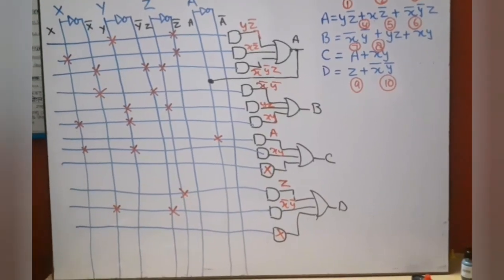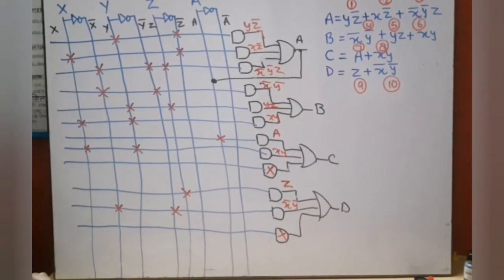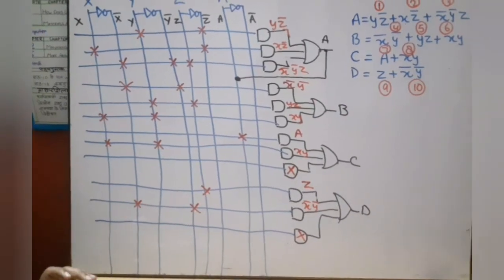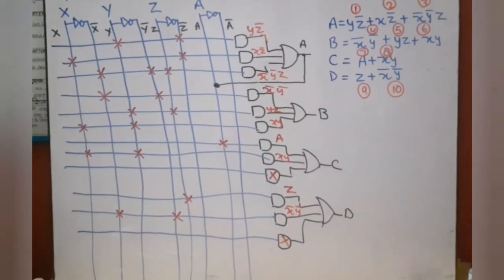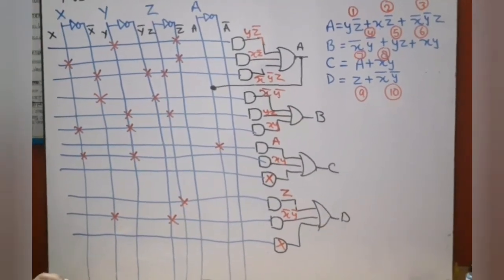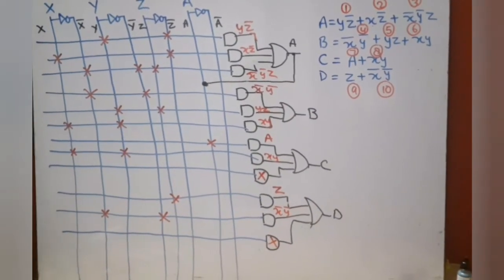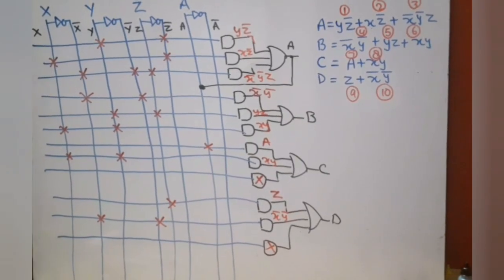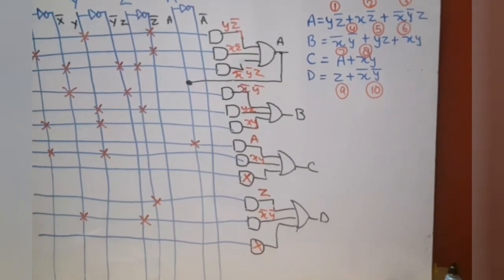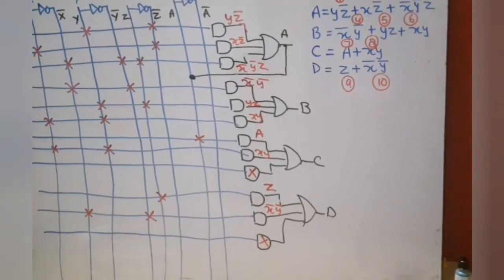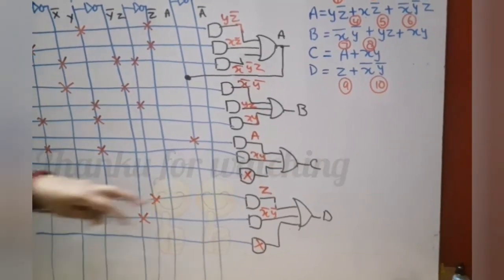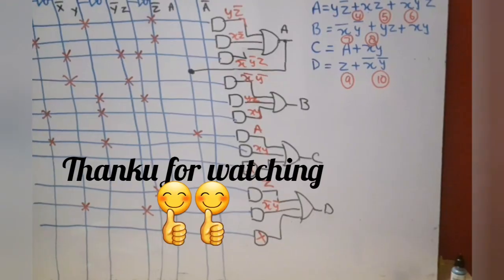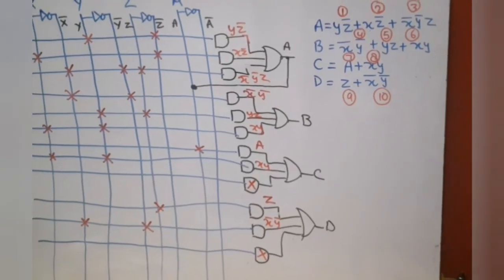Please remember: the number of AND gates depends on the maximum number of product terms among all the functions. Whichever function has the maximum product terms determines the fixed number of AND gates used for all functions. If an AND gate is not used by a particular function, we put a cross for that AND gate. Thank you so much.